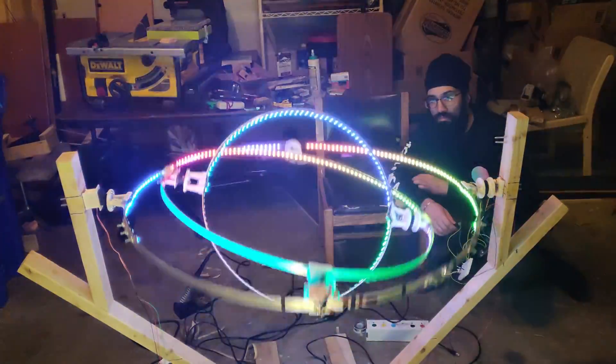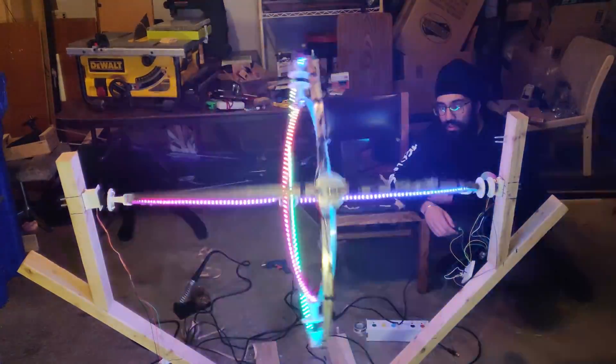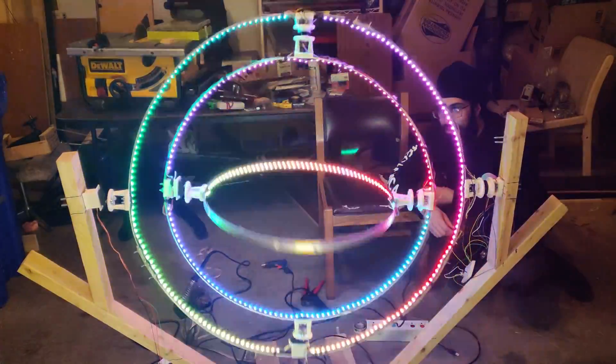What you see before you is called a spinning armillary. It's often incorrectly referred to as a gyroscope and is used to represent planetary orbits.